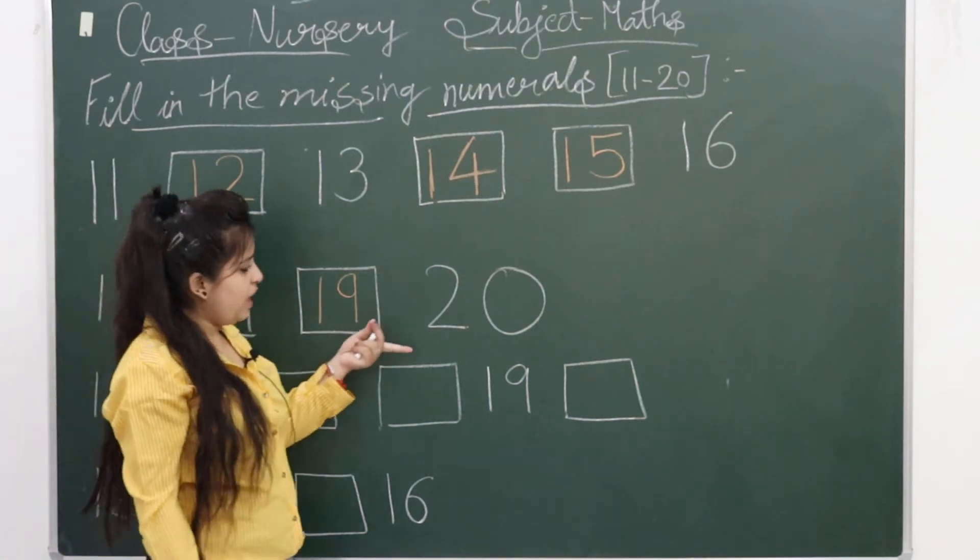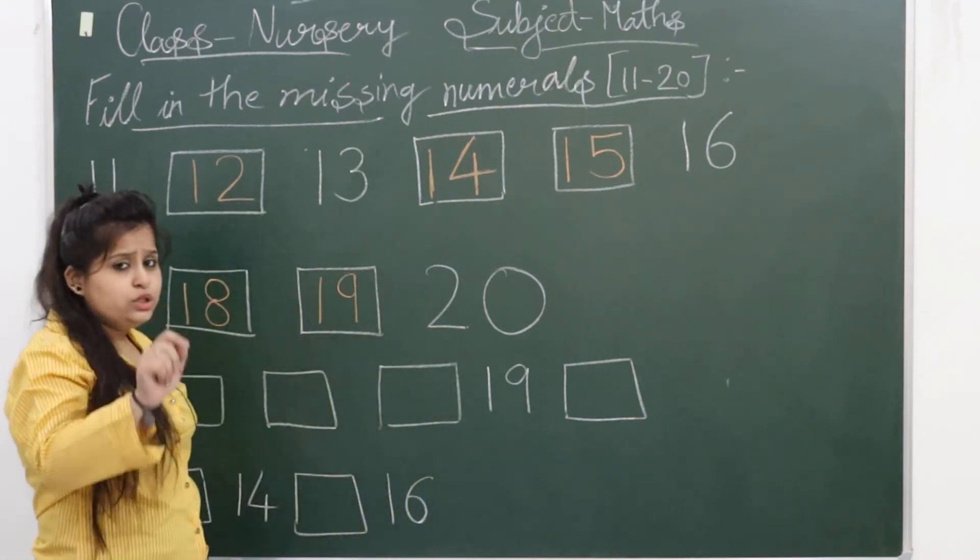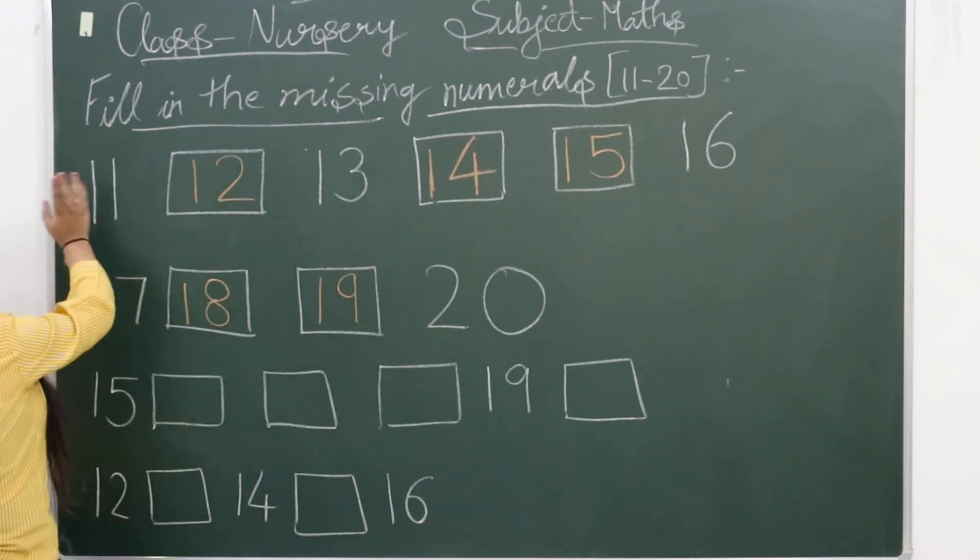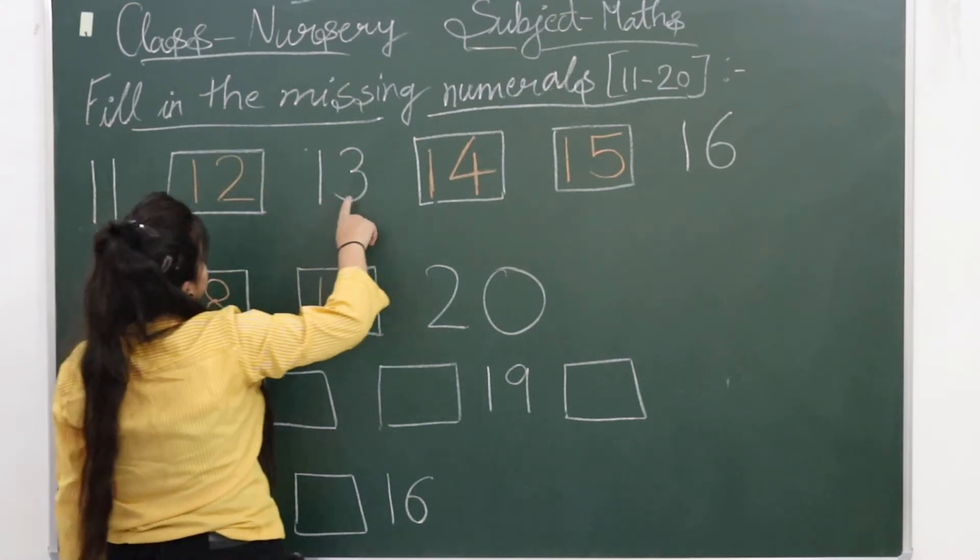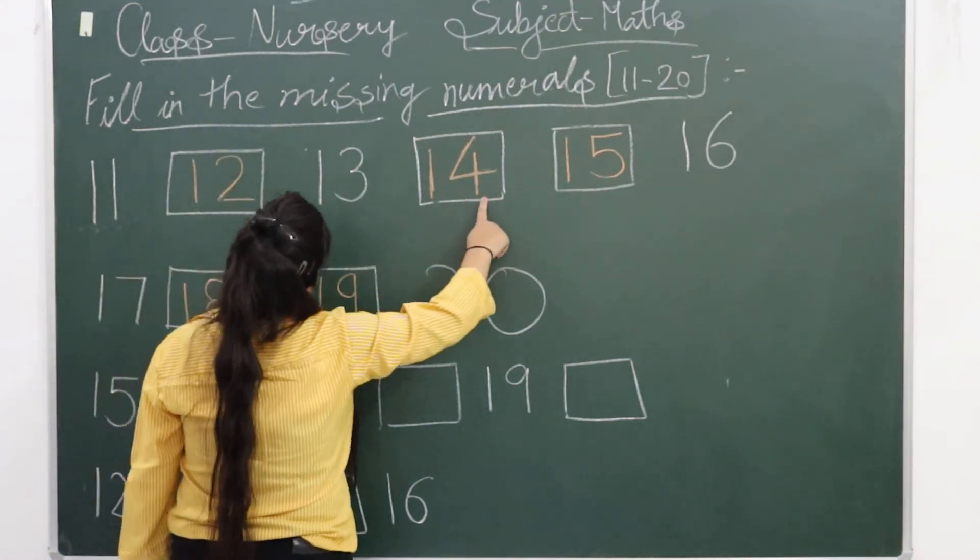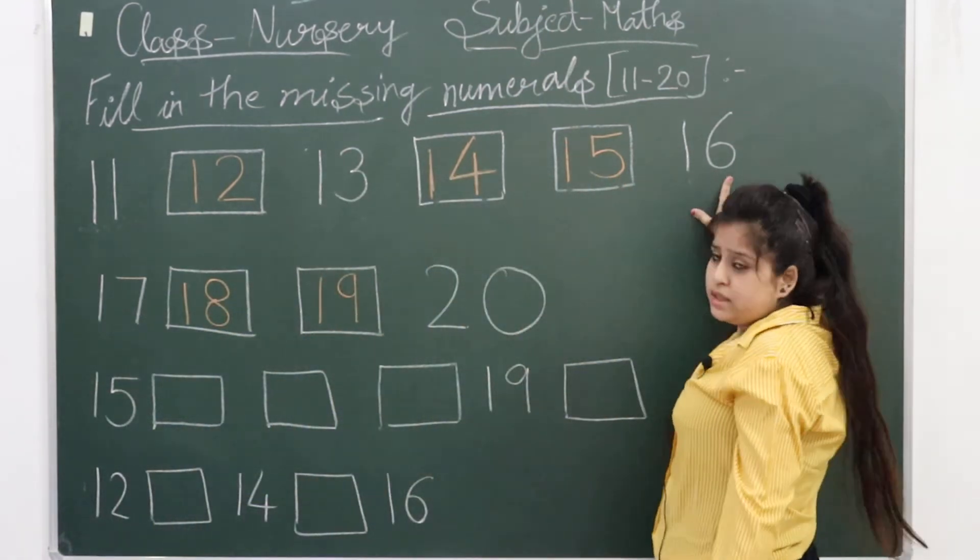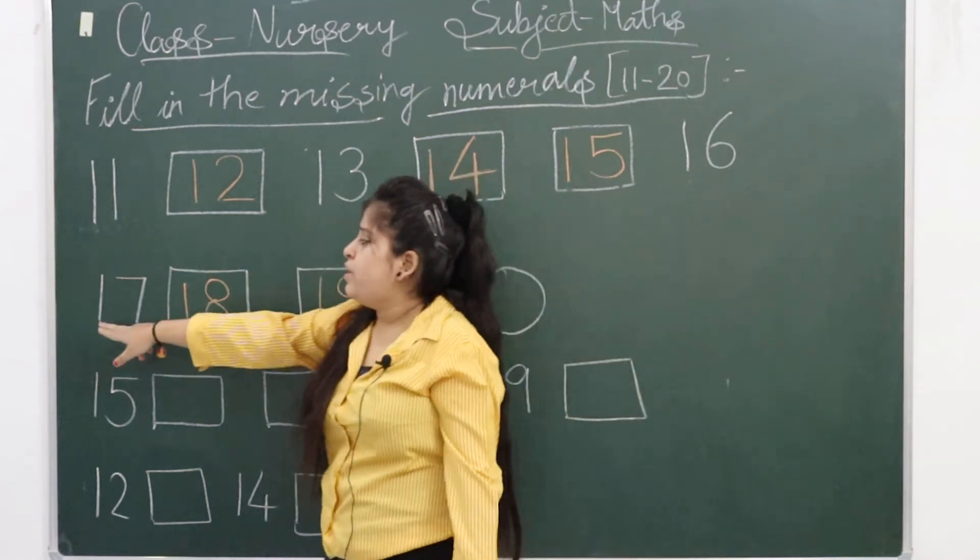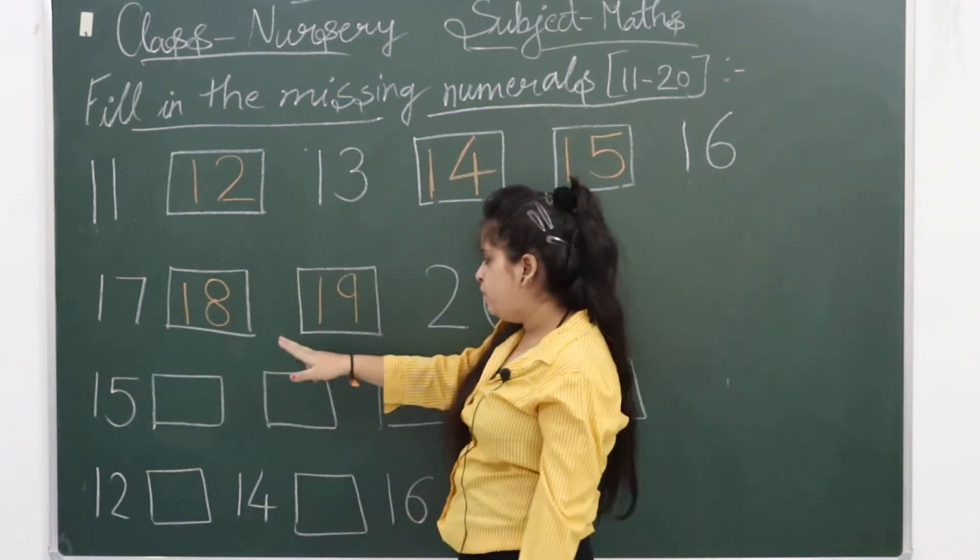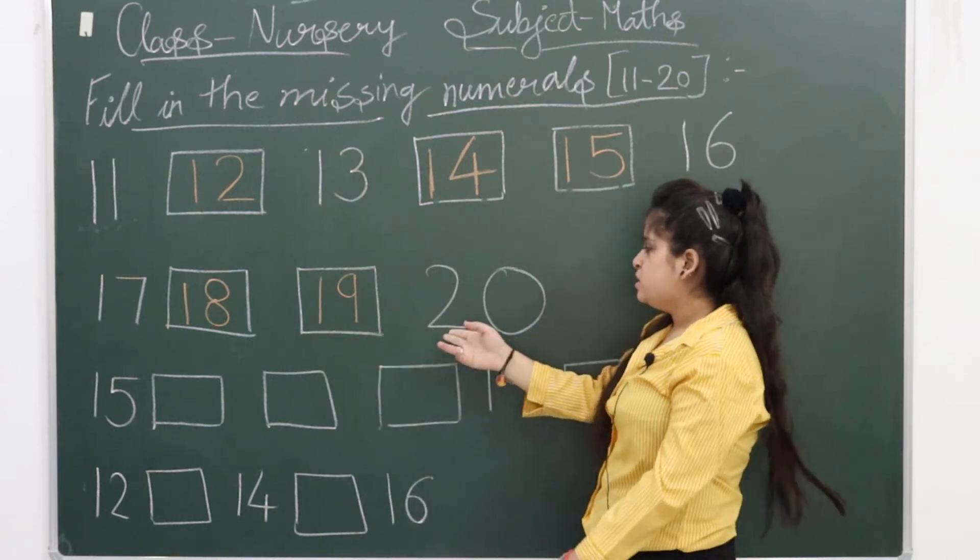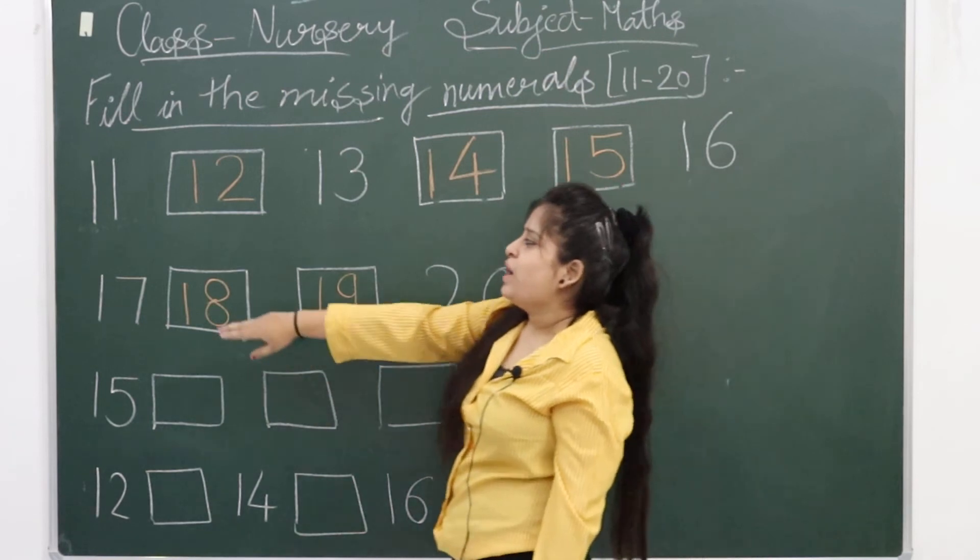So we are done with two rows. First one was 1-1 eleven, 1-2 twelve, 1-3 thirteen, 1-4 fourteen, 1-5 fifteen, 1-6 sixteen. Then 1-7 seventeen, 1-8 eighteen, 1-9 nineteen, 2-0 twenty. You notice something? Yes, we are done with 1-1 eleven to 2-0 twenty without breaking the chain.